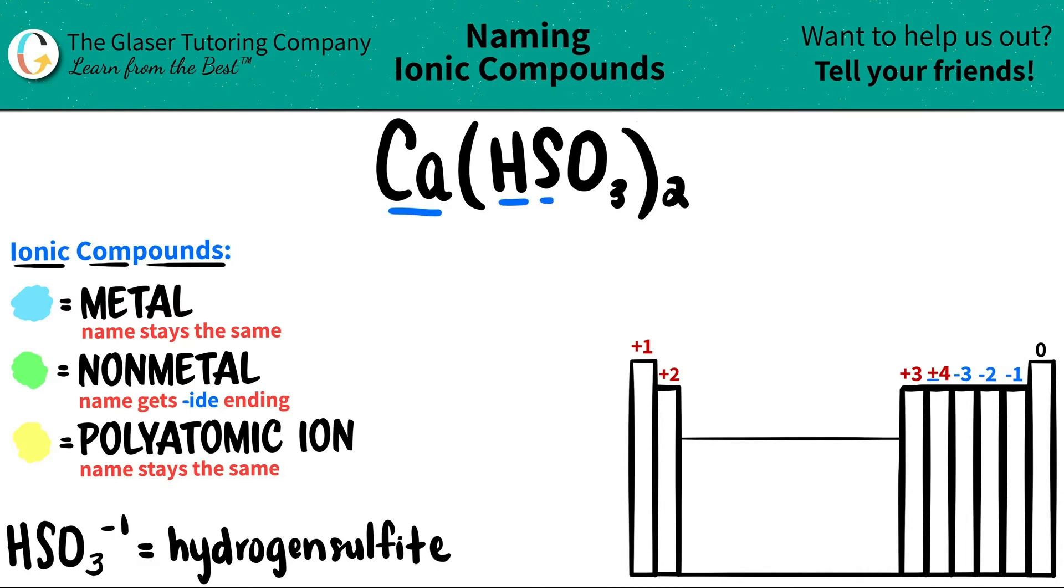We have calcium, hydrogen, sulfur, and oxygen. If you see that you have three or more different elements, you know you're dealing with at least one polyatomic ion.